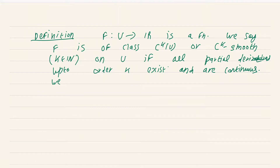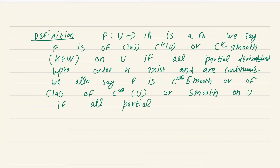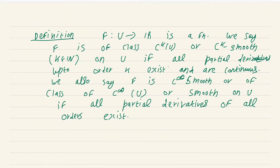We also say f is C^∞ smooth, or of class C^∞(U), or just plain smooth on U, if all partial derivatives of all orders exist. Note there is no continuity requirement here; the continuity requirement is automatic. I want you to prove that as a simple exercise.